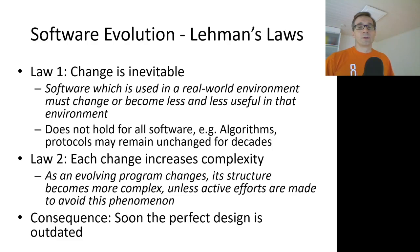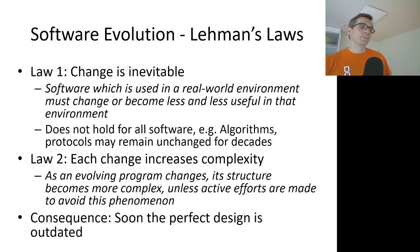Some laws for software evolution have also been proposed, known as Lehmann's Laws. The first two are the most significant. Law one says: change is inevitable — software which is used in a real-world environment must change or become less and less useful in that environment.